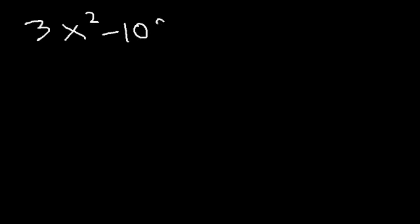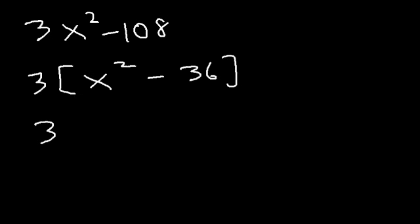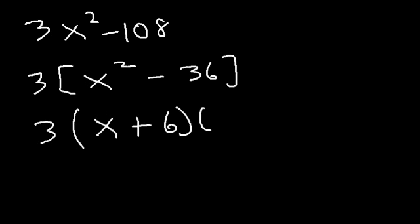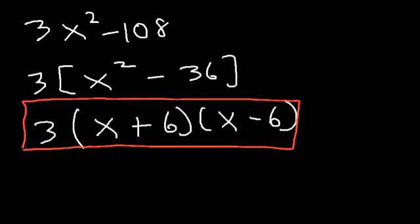Let's try this one: 3x squared minus 108. We can't take the square root of 3 and get a whole number, so let's remove the GCF first. 3x² divided by 3 is x², and 108 divided by 3 is 36. Now we can factor x squared minus 36 — the square root of 36 is 6, so this is (x plus 6)(x minus 6), all multiplied by 3.